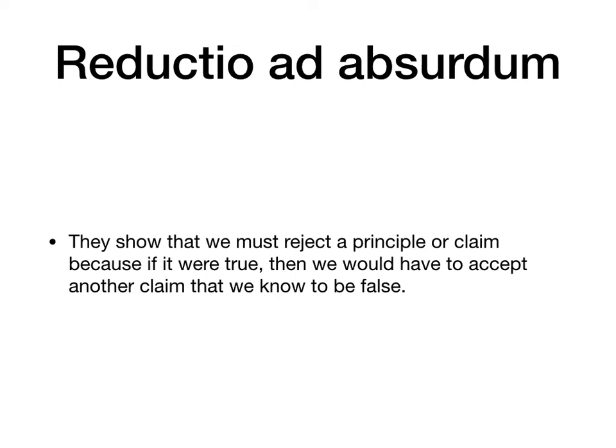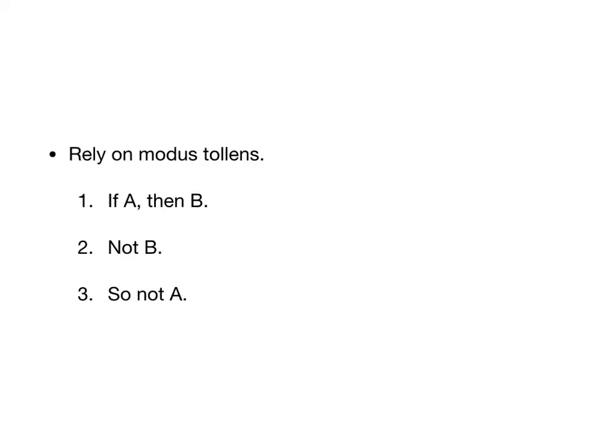Counterexamples and reductios are basically the same kind of thing — a reductio is just a more developed, more explicit version. A reductio ad absurdum is a kind of argument that shows we must reject a principle or claim because if it were true, we would have to accept another claim that we know to be false. Reductio arguments rely on modus tollens: if A then B, not B, so not A. We want to show that if A is true, then this other thing B that we know is false is also true — since B can't be true, we have to reject A.